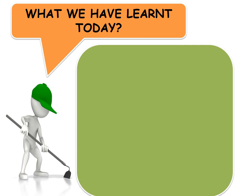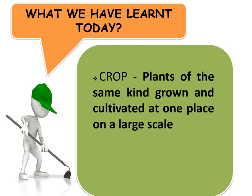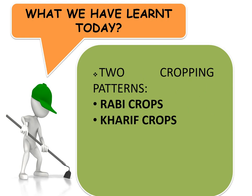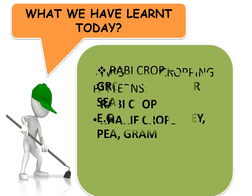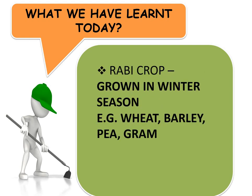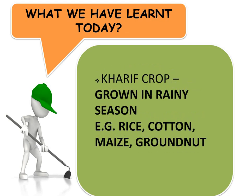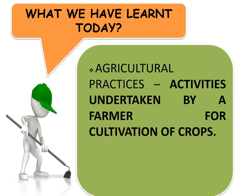What have we learnt today? A crop is plants of the same kind grown and cultivated at one place on a large scale. Cropping patterns: Rabi crops and Kharif crops. Rabi crops are grown in winter season, for example wheat, barley, tea, and gram. Kharif crops are grown in rainy season, for example rice, cotton, maize, and groundnut. Agricultural practices are activities undertaken by a farmer for cultivation of crops.